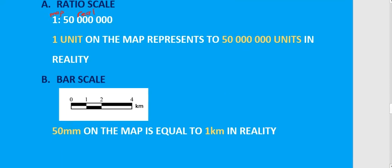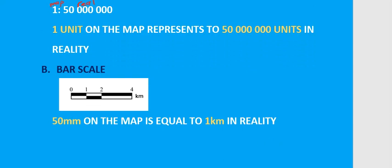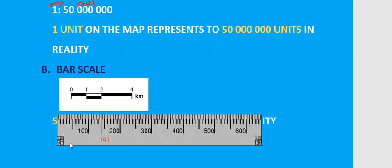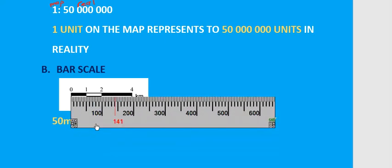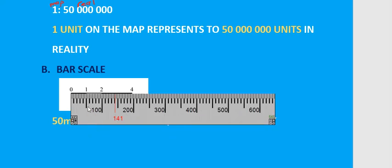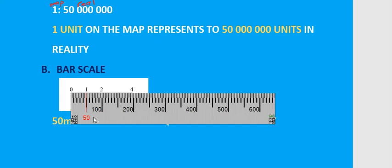Explaining the bar scale is slightly more complicated because you need to measure the bar before you can explain it. For a bar scale you need to measure first. We just need to measure from 0 to 1 — just one bar — to see how long that is. Measuring from 0 to 1, we find that it's 50 millimeters, as my ruler here is doing measurements in millimeters. So one kilometer is represented by 50 millimeters on the map.